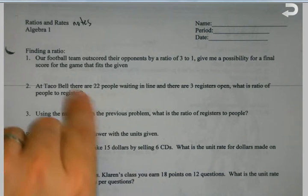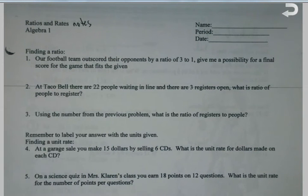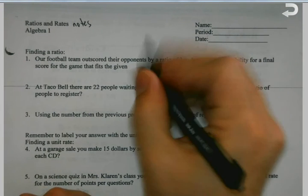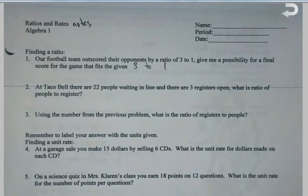For instance, it says our football team outscored their opponents by a ratio of 3 to 1. Give me the possibility for a final score for the game that fits the given. If the ratio is 3 to 1, when you're playing football, what do you get for a touchdown? Six points. And most of the time they kick the extra point and get 7.